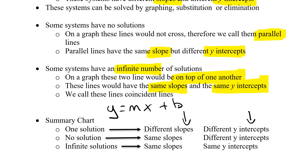We looked at this in Chapter 6 — slope-intercept form. The number in front of our x is our slope. Watch your signs — plus and minus are different slopes. And the constant by itself at the end is our y-intercept.